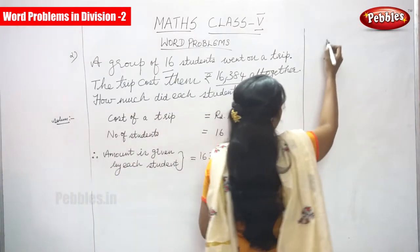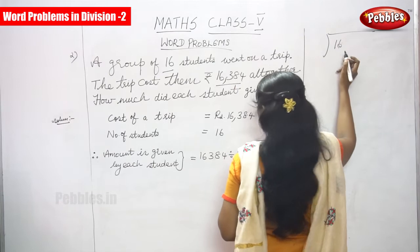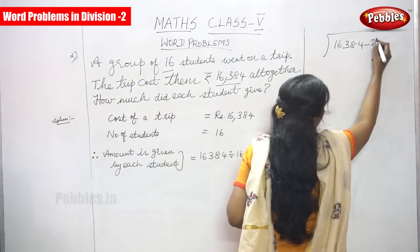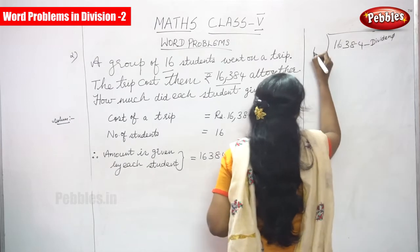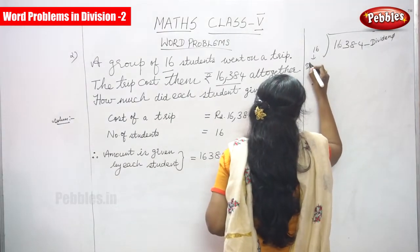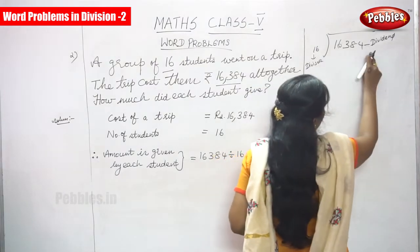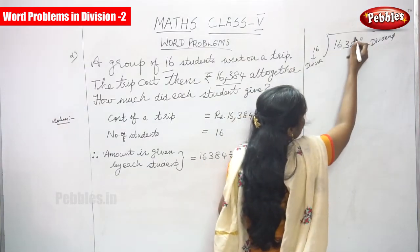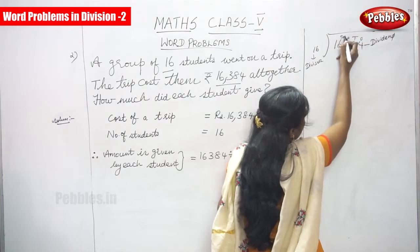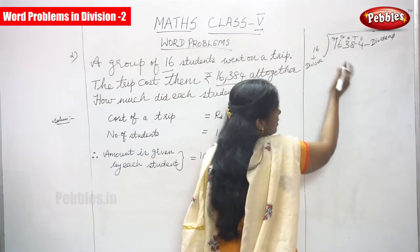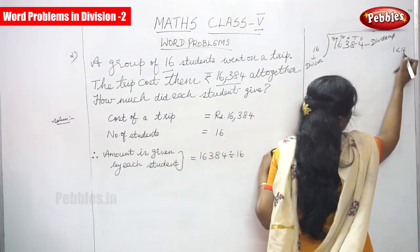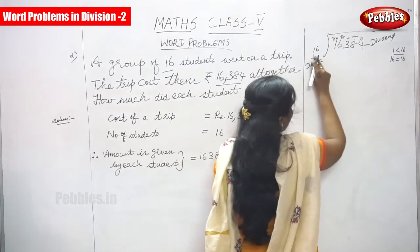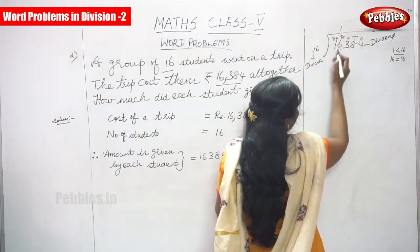I am going to division here. 16,384 is the dividend and 16 is the divisor. Take the first digit, which is 1. Since 1 is less than 16, you can't divide. Go to the next digit — that gives us 16. 16 divided by 16 is 1, since 1 times 16 equals 16.